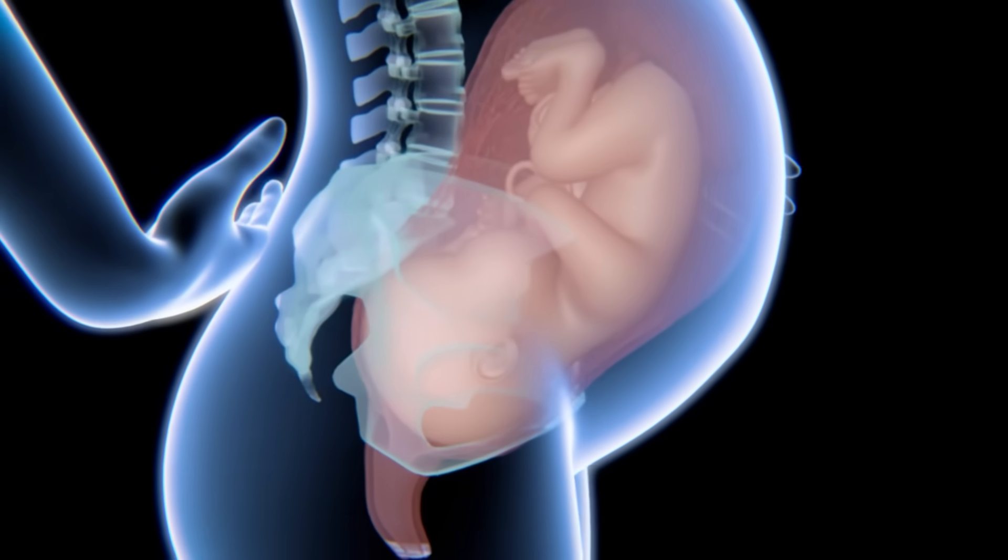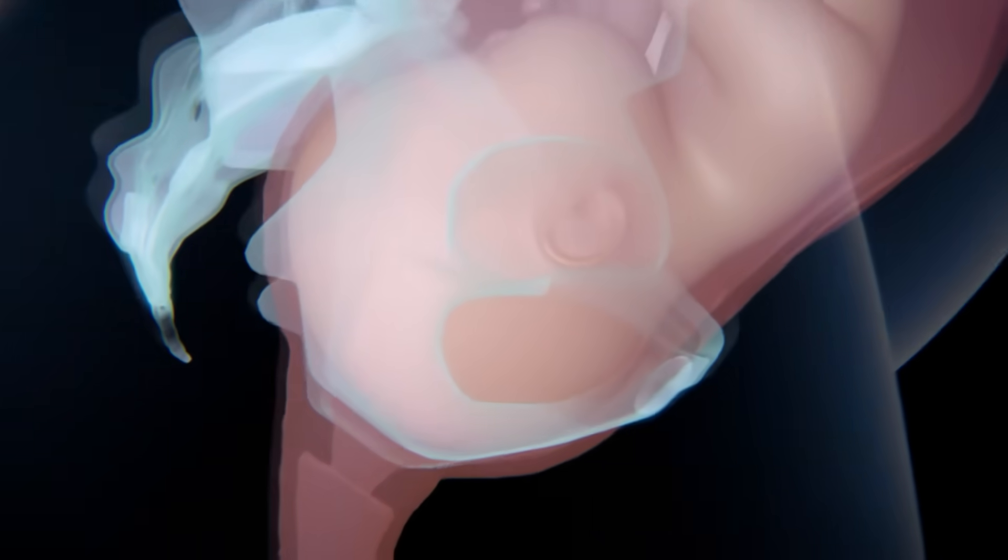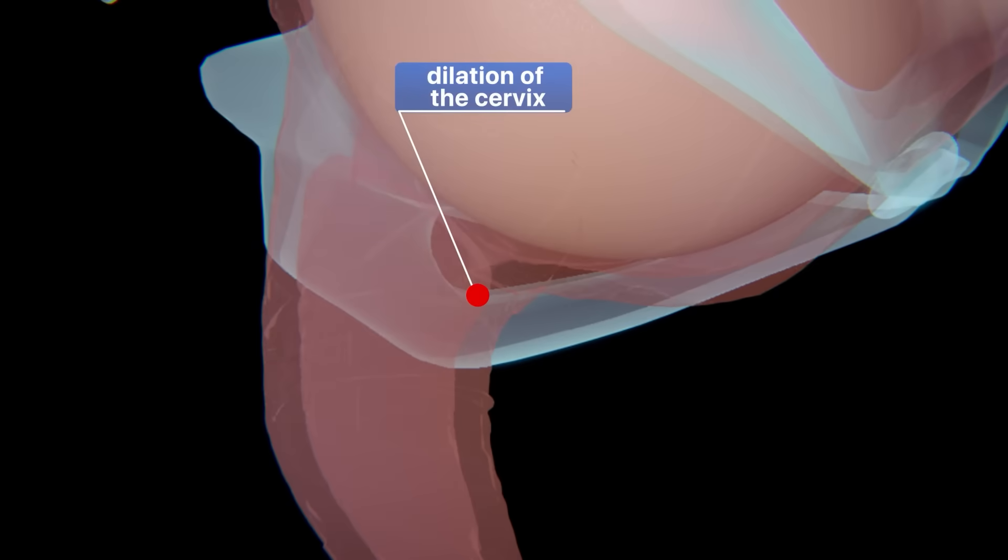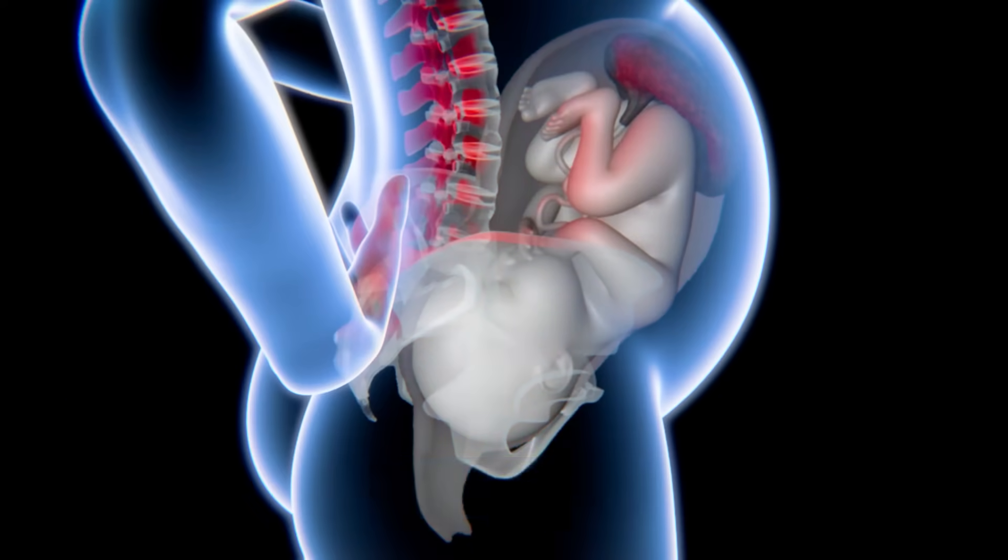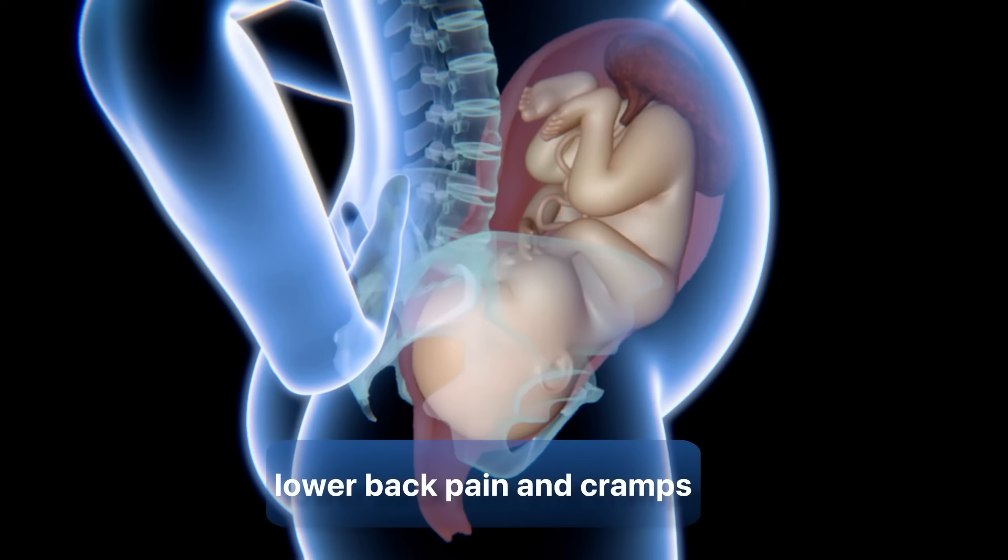In response to this, the cervix begins to open or become thinner and dilate. During this process, the mother may begin to feel strong and regular contractions that occur every 5 to 20 minutes in addition to lower back pain and cramps that do not go away.